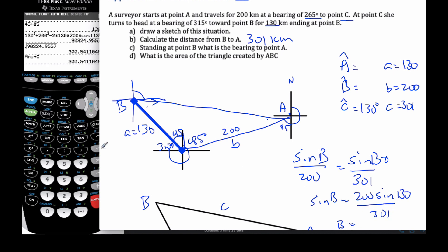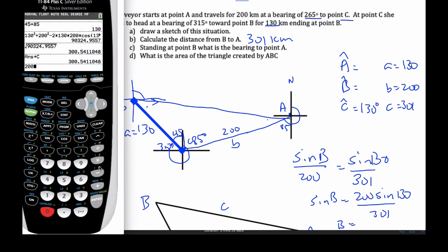So, sine of B multiplied by 200 is 200 sine of 130 over 301. And let's get B. So, I'm going to get 200 times sine of 130, close parenthesis, divide by, I'm going to divide by alpha C, alpha C. And that gives me this value, I'm going to go second sine of my answer.